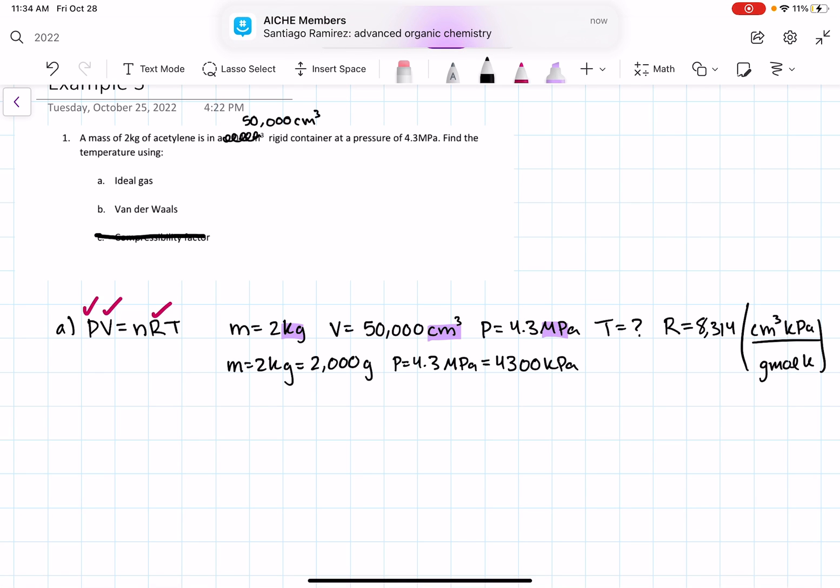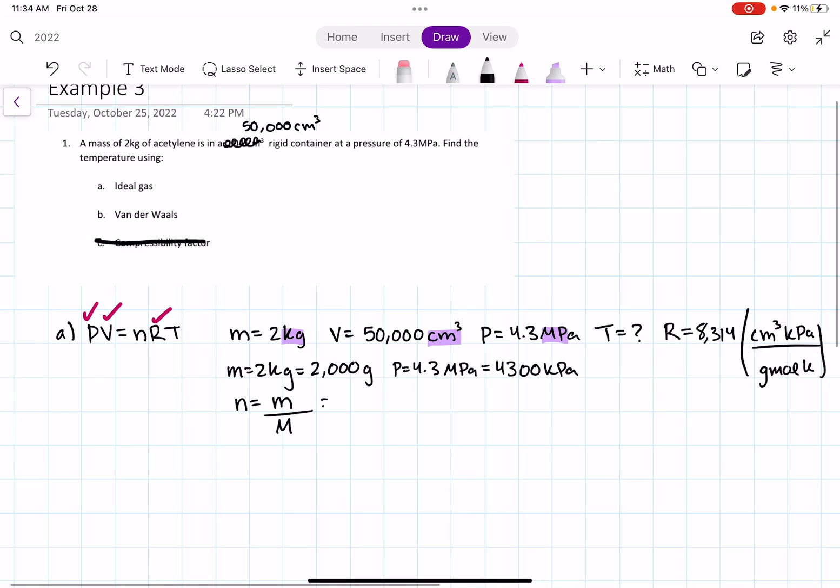Since we know that moles is equal to our mass divided by the molar mass of the substance that we're using in the problem. So our mass is 2,000 grams. And our molar mass for acetylene, if we look it up, is in the end of my textbook in my thermodynamic tables. And it says that the molar mass is 26.038.